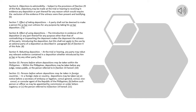Section 6. Objections to Admissibility. Subject to the provisions of Section 29 of this rule, objections may be made at the trial or hearing to receiving in evidence any deposition or part thereof for any reason which would require the exclusion of the evidence if the witness were then present and testifying. Section 7. Effect of Taking Depositions. A party shall not be deemed to make a person his or her own witness for any purpose by taking his or her deposition.